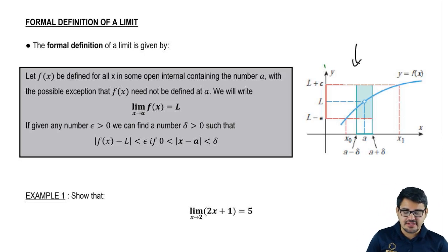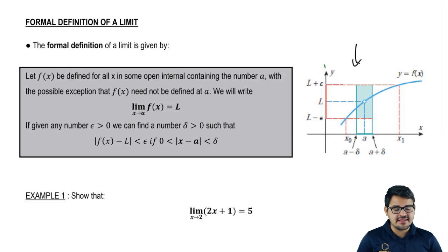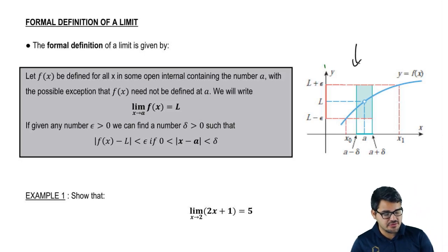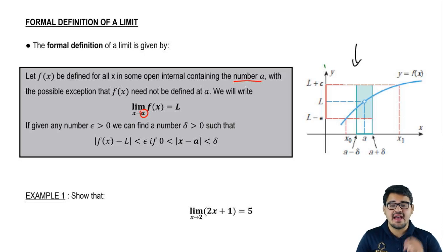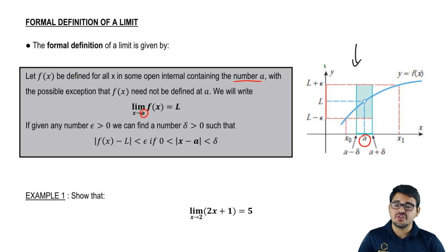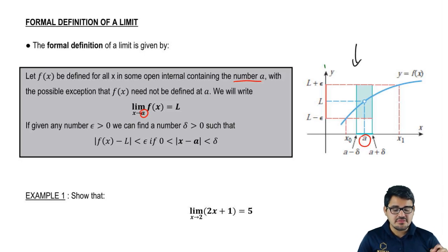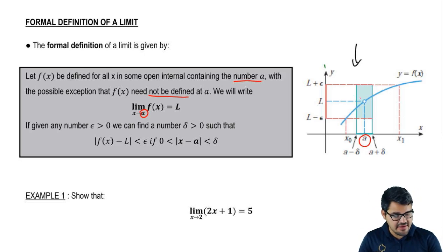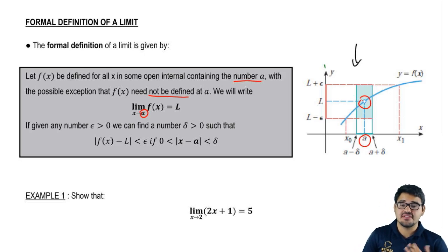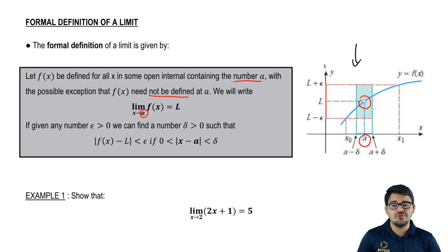It says: let f of x be defined for all x in some open interval containing the letter a. So we're going to have some open interval that contains our letter a. Letter a is the x value that you're going to try to approach — you see it here in your limit, and also here in your graph, it is that x value you're trying to get to. And with the possible exception that f of x need not be defined at a, which is a fancy way of saying it's going to have a little hole there. So at a, it doesn't actually need to be defined — that possibility is on the table.